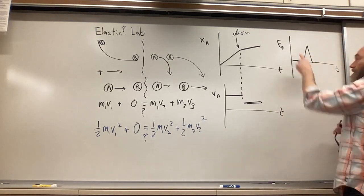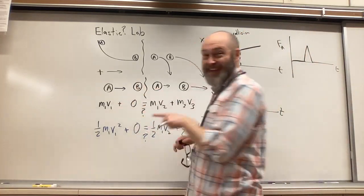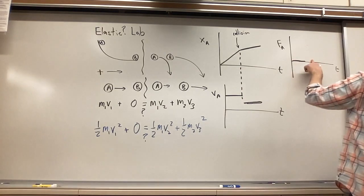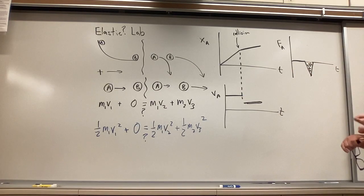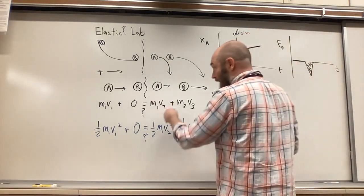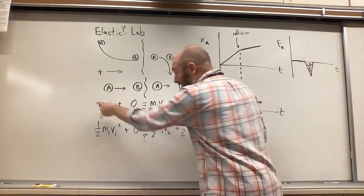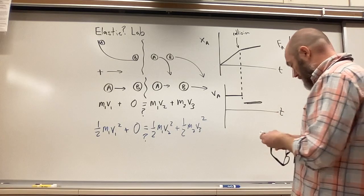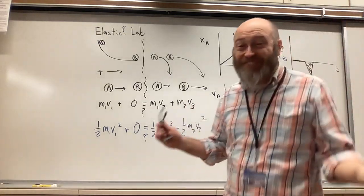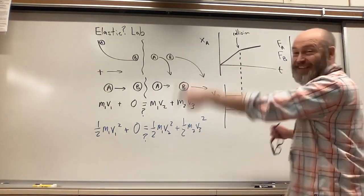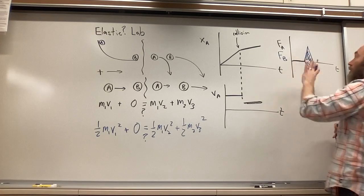We have to be careful because force is a vector. I already called to the right positive, so which way does marble B push on marble A? That way — meaning to the left, which is negative — so the graph dips below zero. The area of that force-time graph equals the impulse on A, which equals the final momentum of A minus the initial momentum of A.